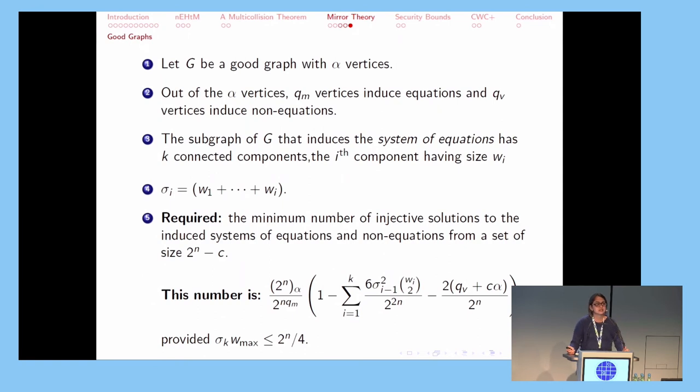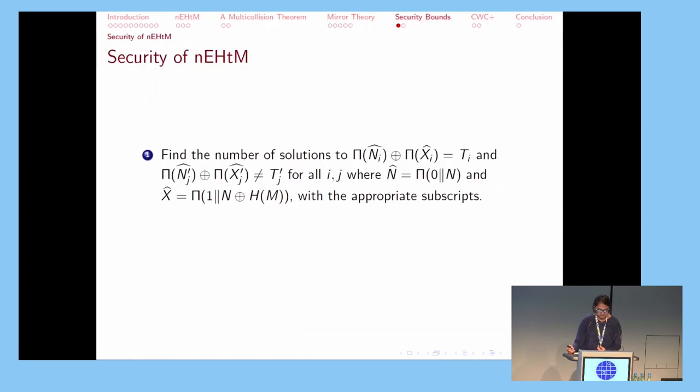If G is such a good graph with α vertices, out of which QM vertices are involved in equations and QV vertices are involved in non-equations, then the minimum number of injective solutions to the systems of equations and non-equations that G induces—we have proved it to be this number. We can see that this bound is actually weaker than the one provided by Patarin. His result was 2^N · P(N, α) / 2^(NQ) and only involved equations.